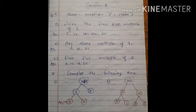Third one, first five multiple of five, which is very easy. Five, ten, fifteen, twenty, twenty-five.